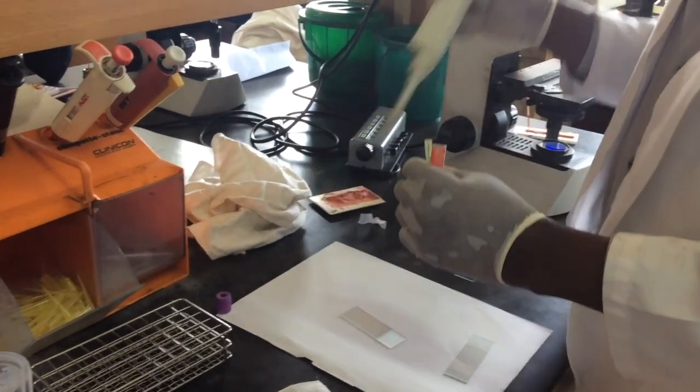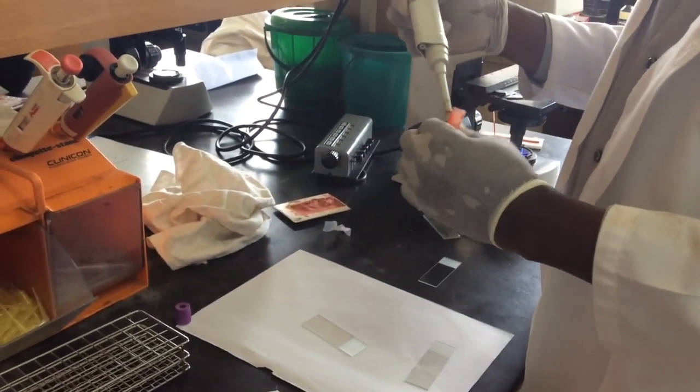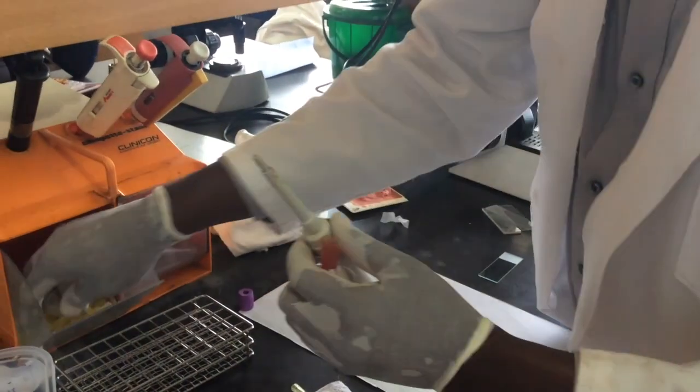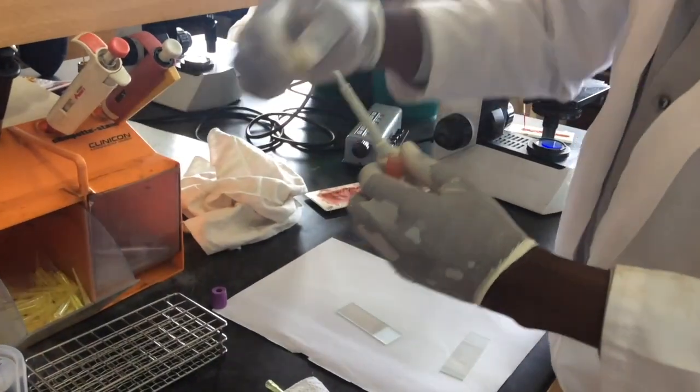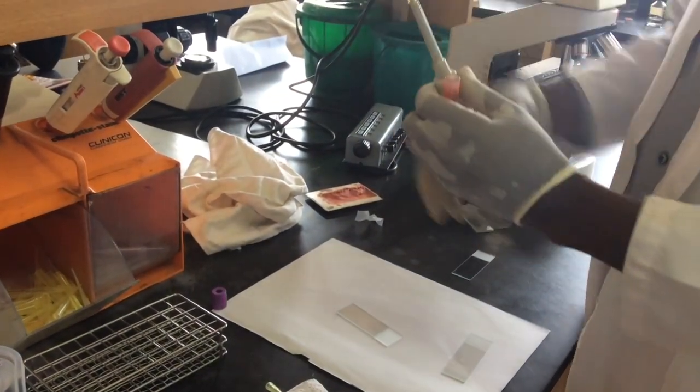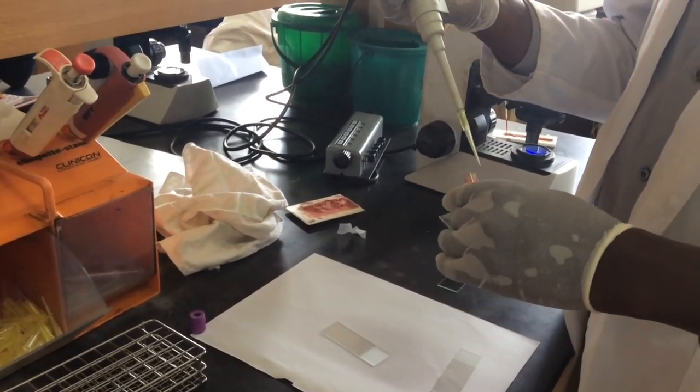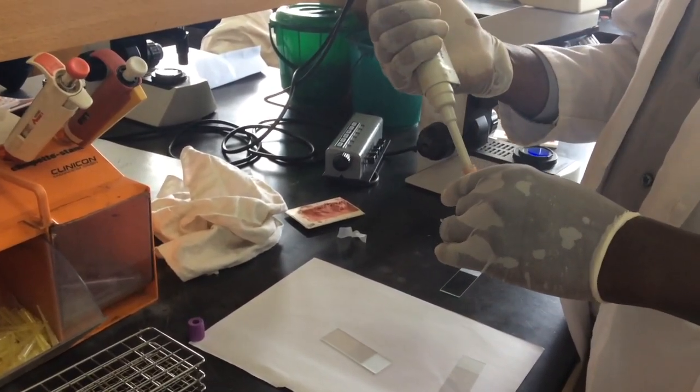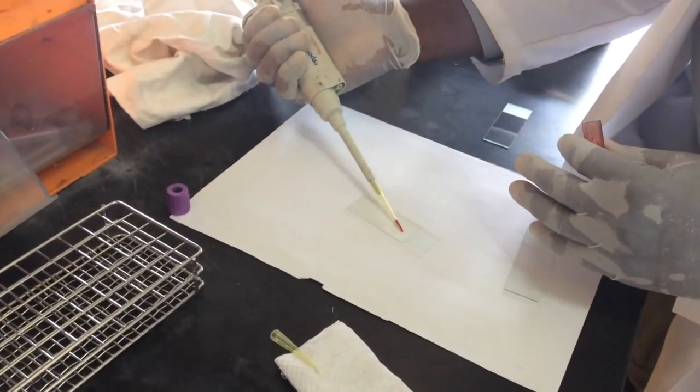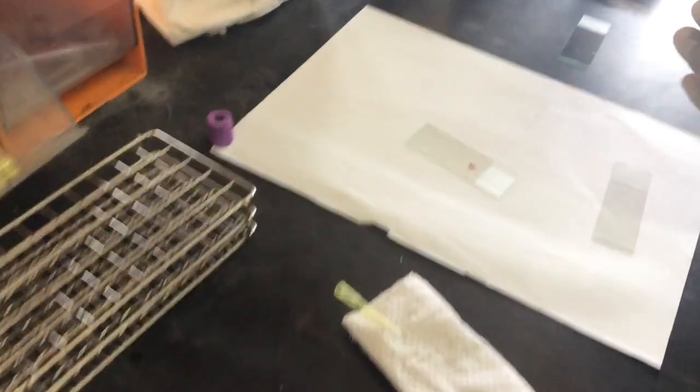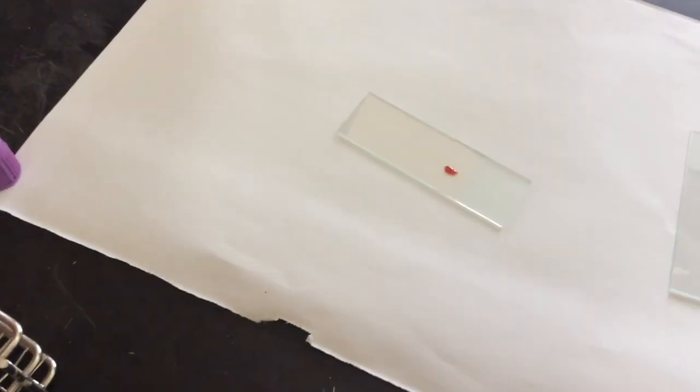So with the pipette, he takes a small drop of blood. He's putting a pipette tip on the Eppendorf pipette. And just a small drop of blood is what is needed. And there we go, a small drop of blood.